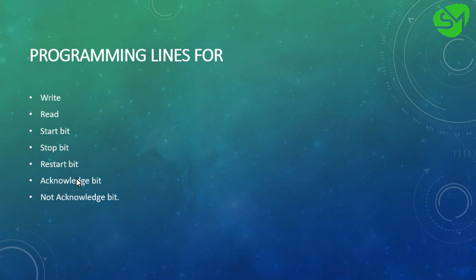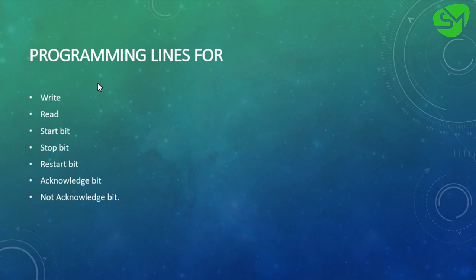The programming sequences we are going to see in this lecture cover how to write to the I2C bus and how to read from the I2C bus, along with the programming sequences for start bit, stop bit, restart bit, acknowledgement bit, and not acknowledgement bit. These sequences are specially meant for establishing I2C communication in our PIC microcontroller and can be used for any device using I2C communication, not only DS1307.